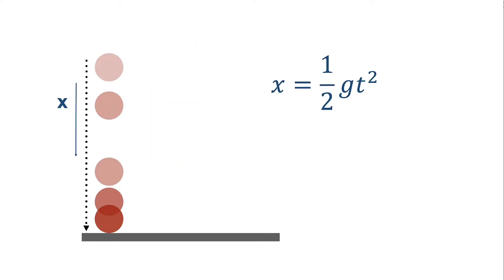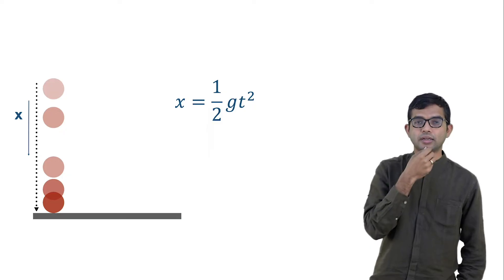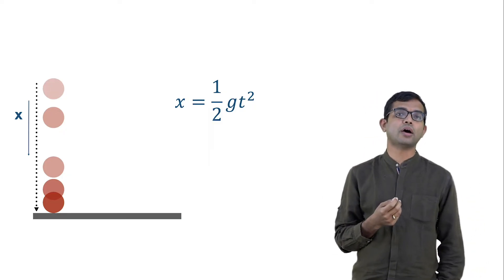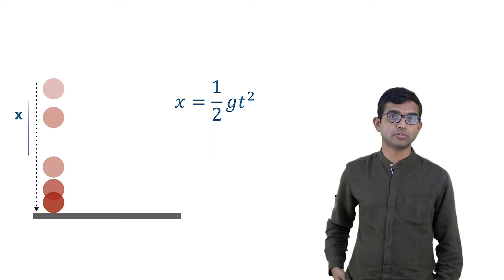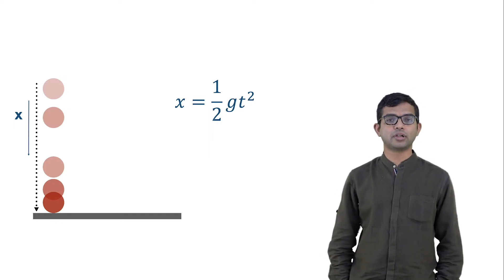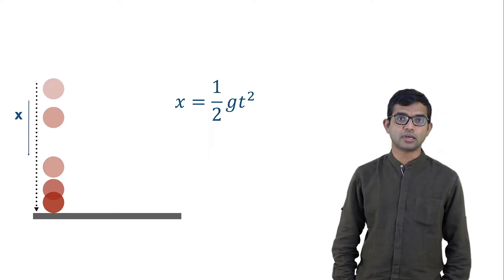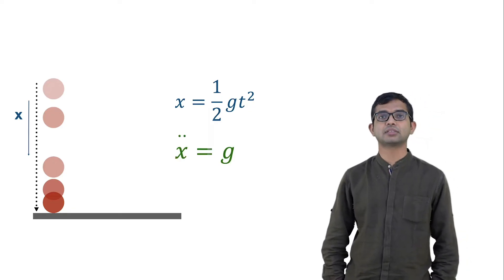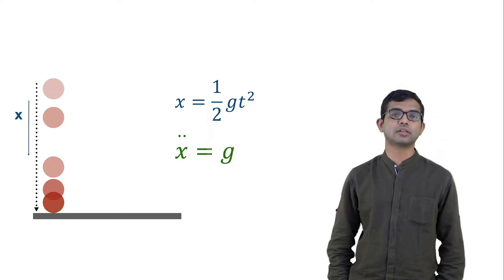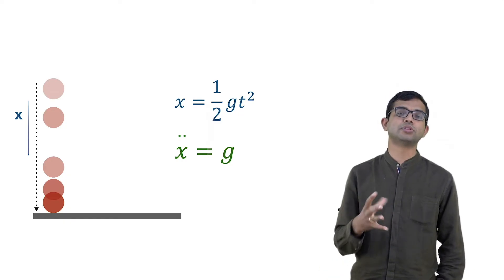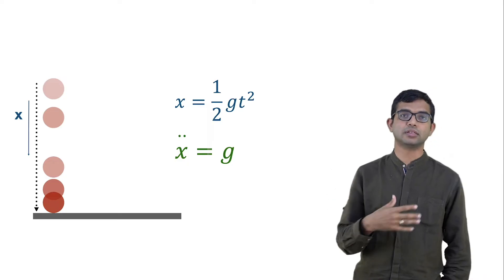Let us take a simple example to illustrate this philosophy of computational thinking. All of us are familiar with dropping a marble from a certain height — it falls down and the trajectory is just a straight line. We can ask how much distance does this particle cover as a function of time. The answer is x = ½gt², as we know from high school physics. This really comes from writing down a differential equation: x double dot equals g, constant acceleration due to gravity, with a couple of steps involved in obtaining the answer.